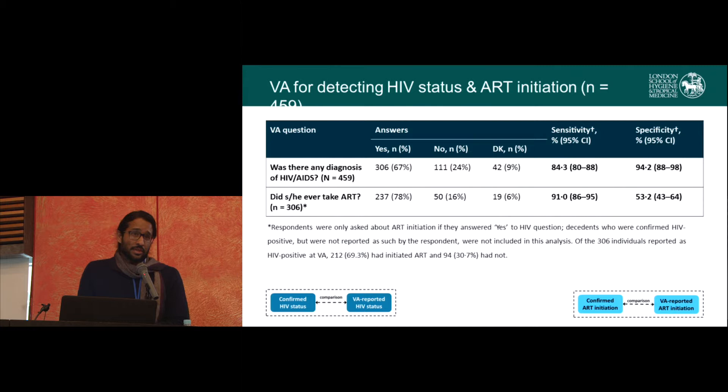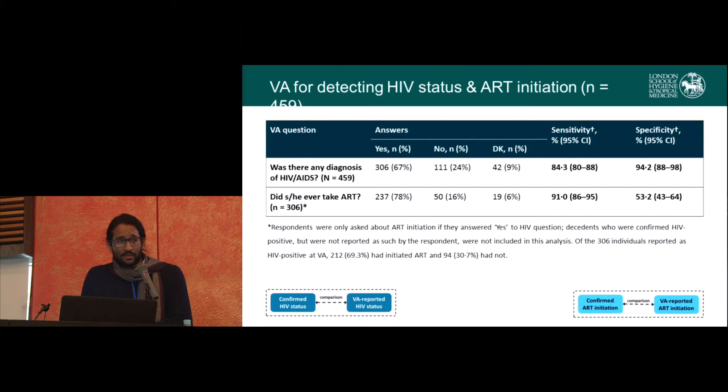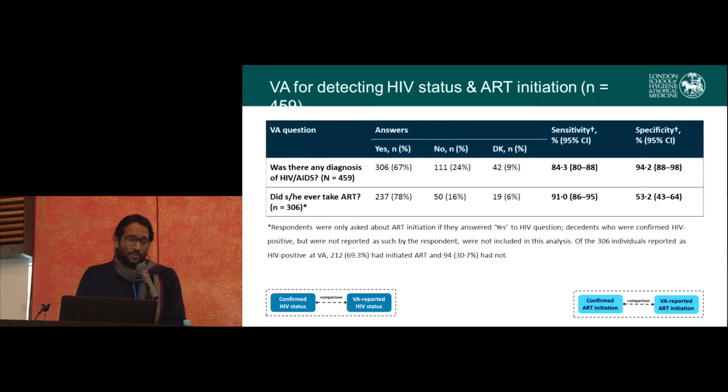The ART question is fairly new — this is only the second study that has ever tested it formally. It was 91% sensitive but only 53% specific. This is relatively understandable: HIV-positive people have a very high pill burden, so it's difficult for family members to know whether the medication being taken was actually ART or one of the numerous other pills. It may be that the question needs refining to improve the specificity.